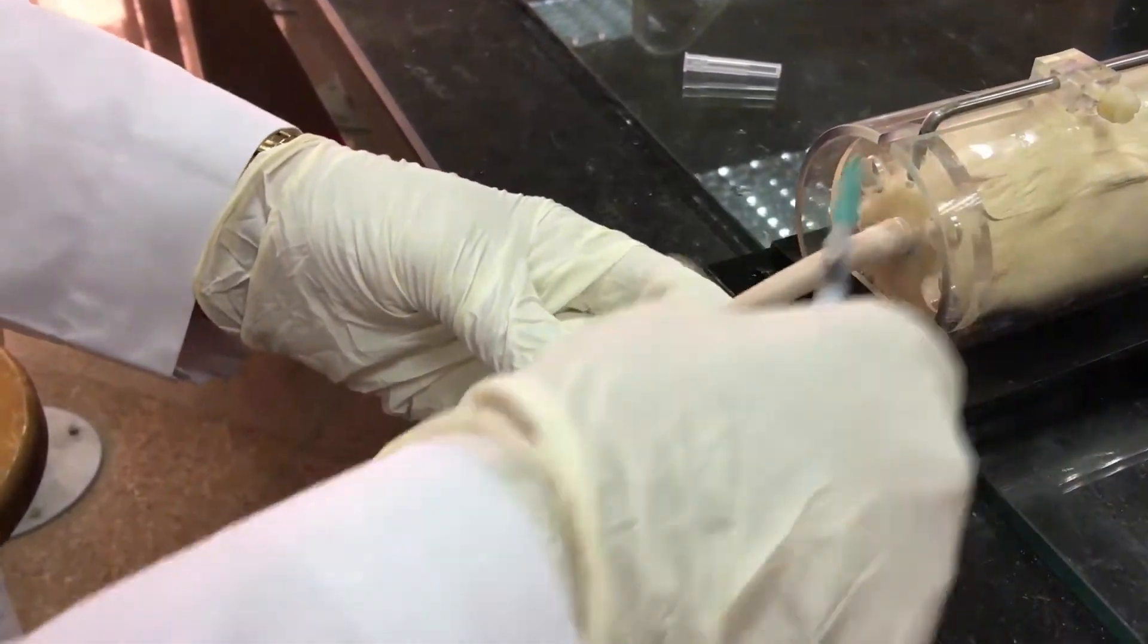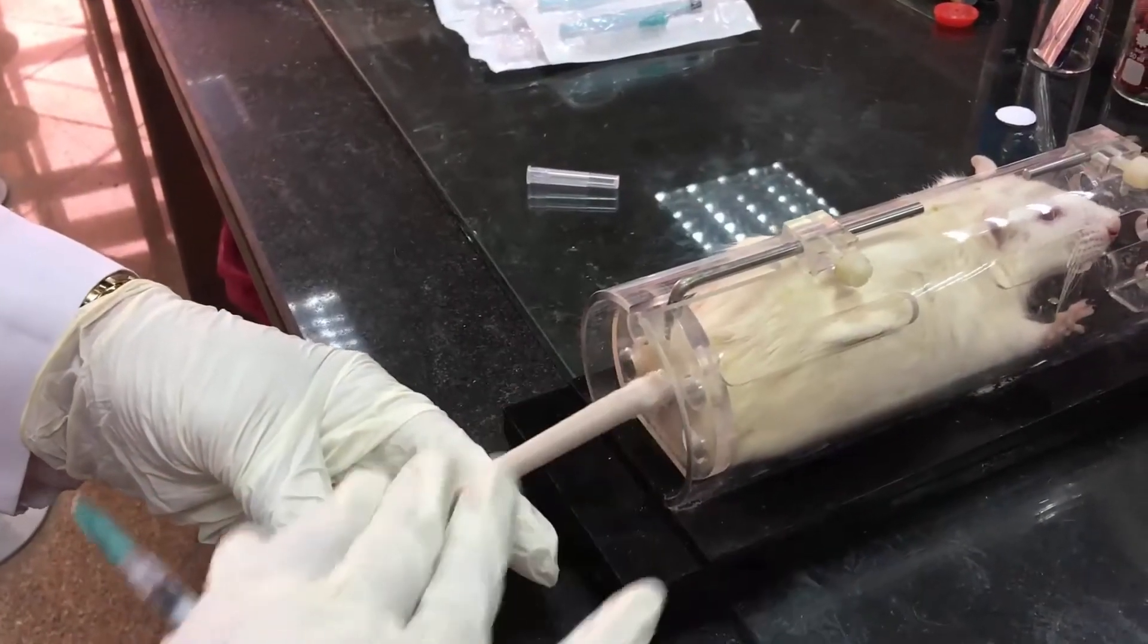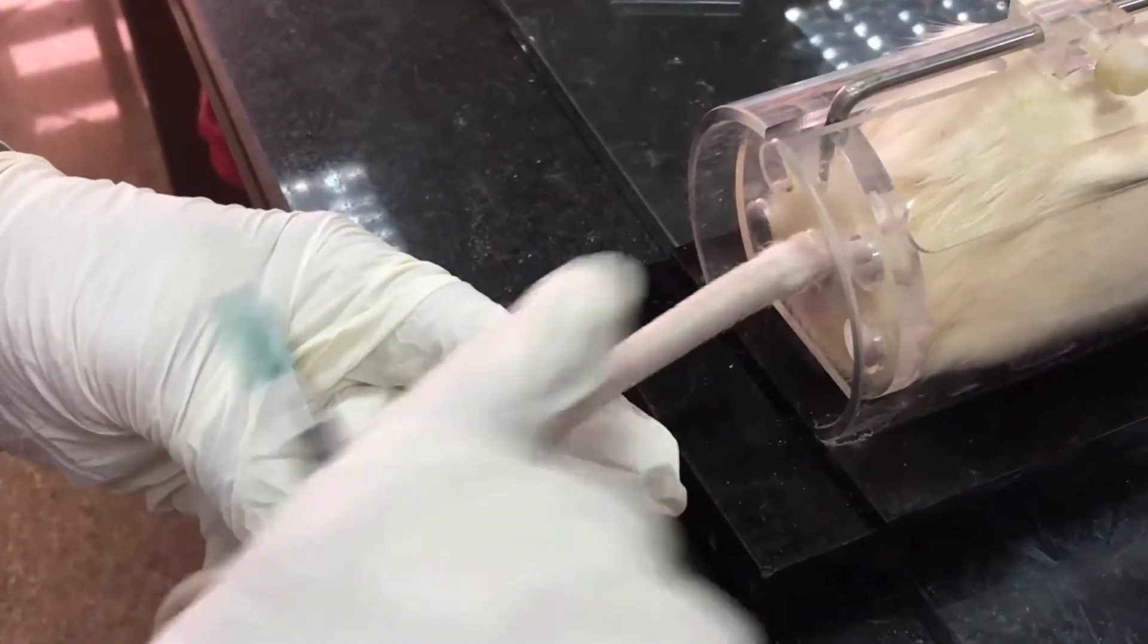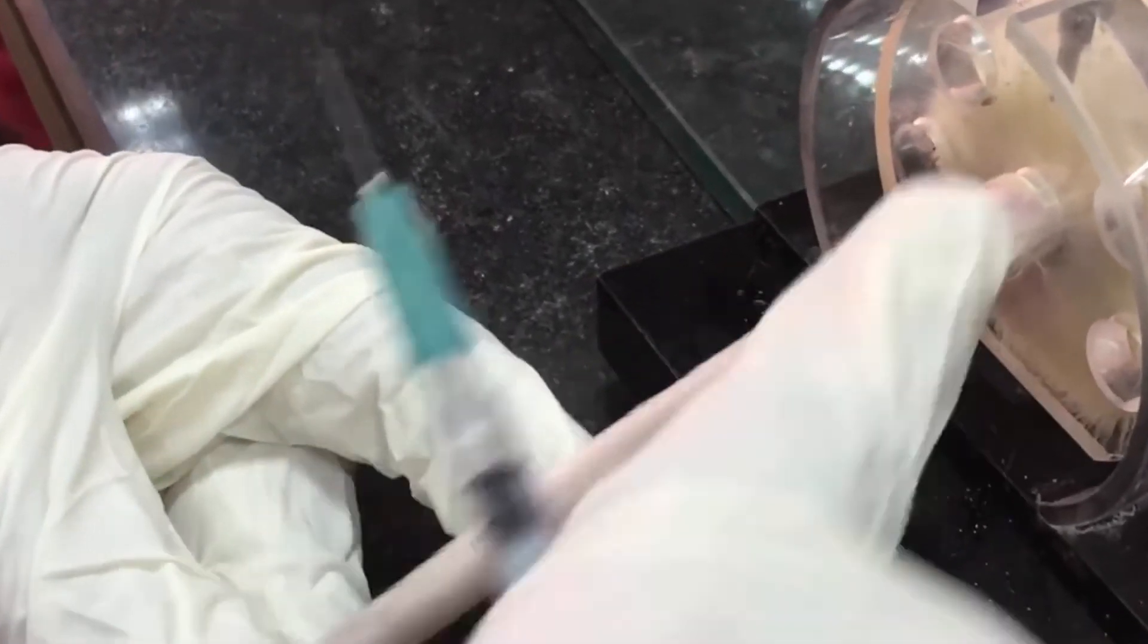Stabilize the tail between thumb and forefinger of the hand, doing massage. Swab the tail with alcohol.